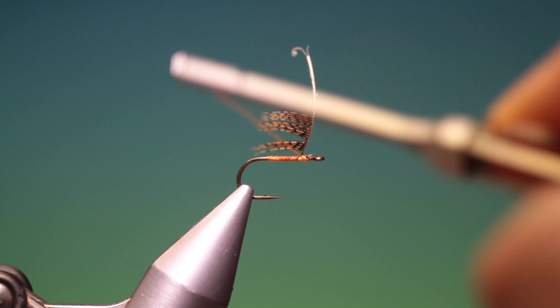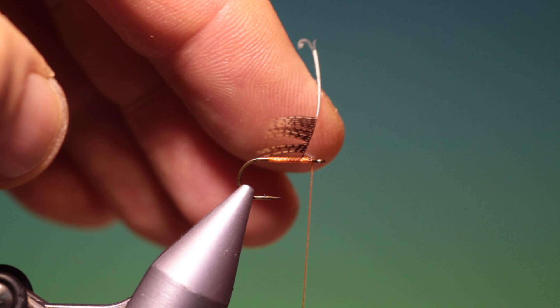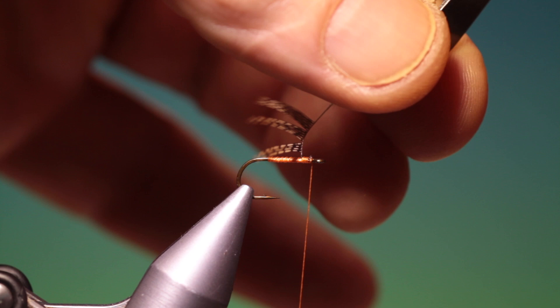Make a couple of turns. Take our hackle plier. Place it on the partridge hook. On the partridge feather.